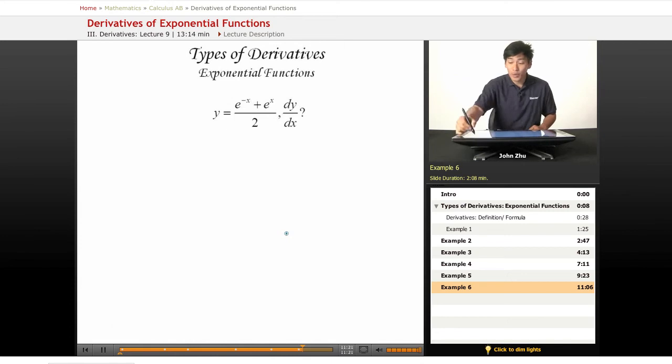But we can also recognize that y simply equals 1 half times e to the negative x plus e to the x, which makes this whole thing a lot simpler because 1 half is just a constant. So we don't have to really think about that in terms of derivatives.